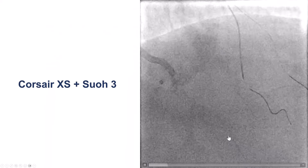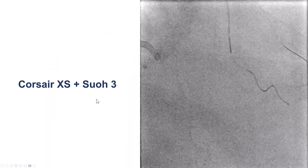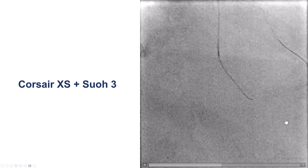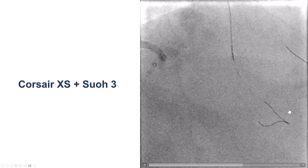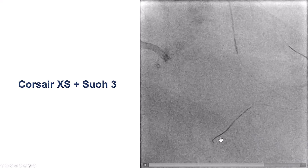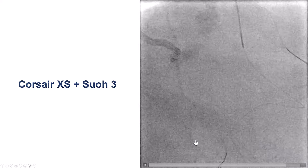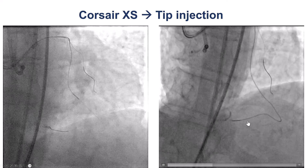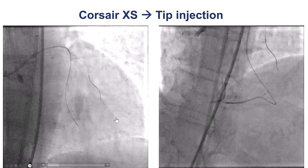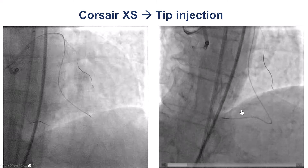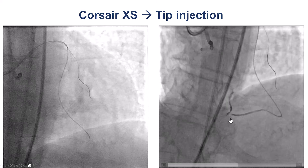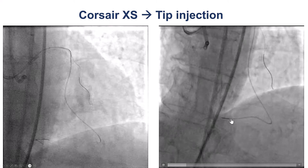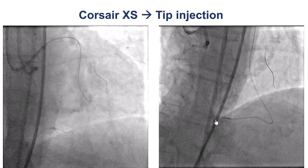We tried with different wires — the SUO 03 through a Corsair XS. The wire went in different locations, but eventually took the bend and advanced nicely across the course of the RCA, confirmed with contralateral injection. We then delivered the microcatheter and did a tip injection showing a little filling of the distal right coronary artery.